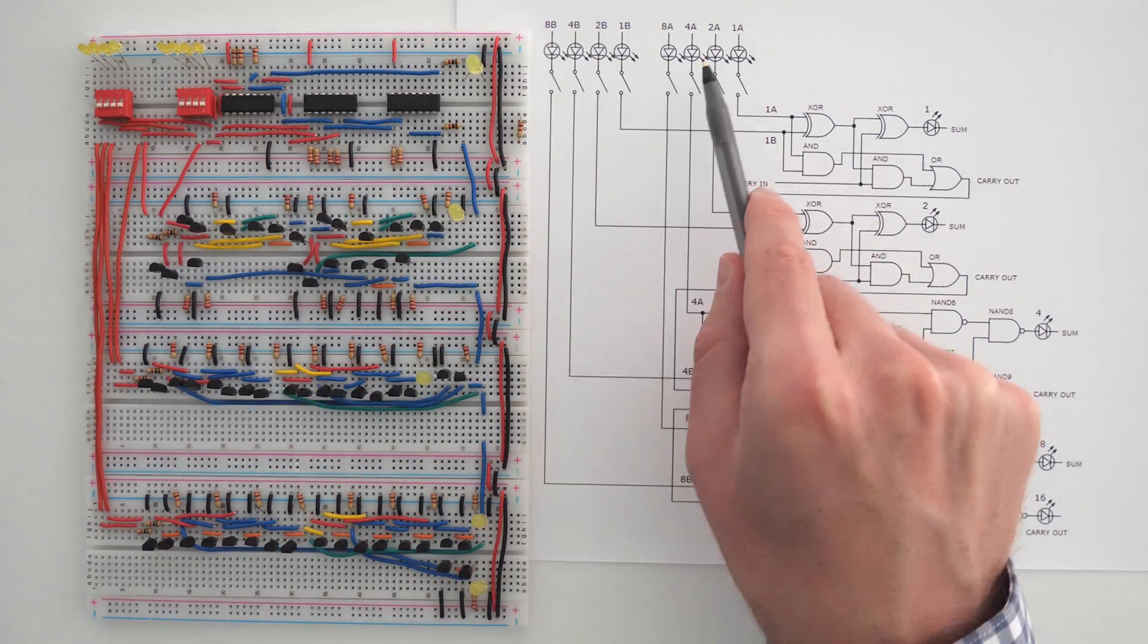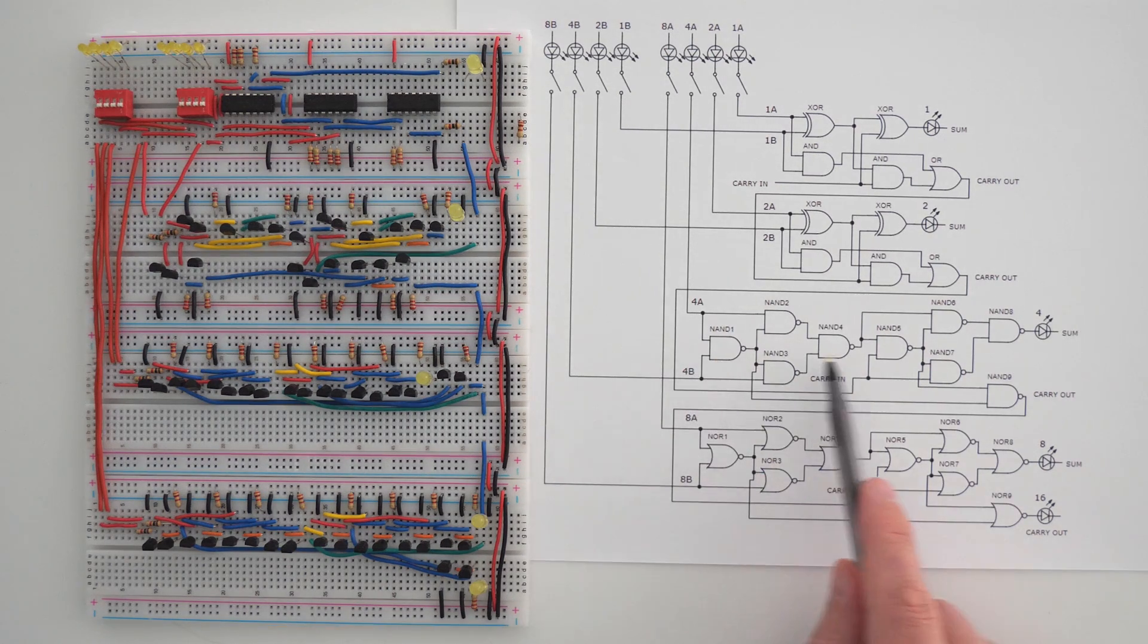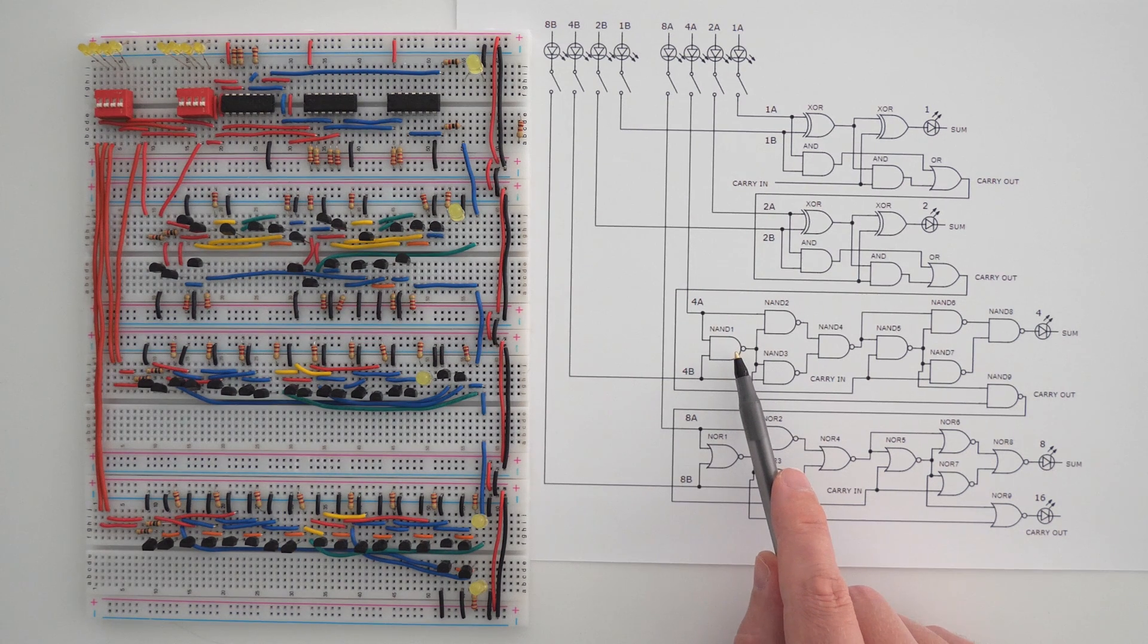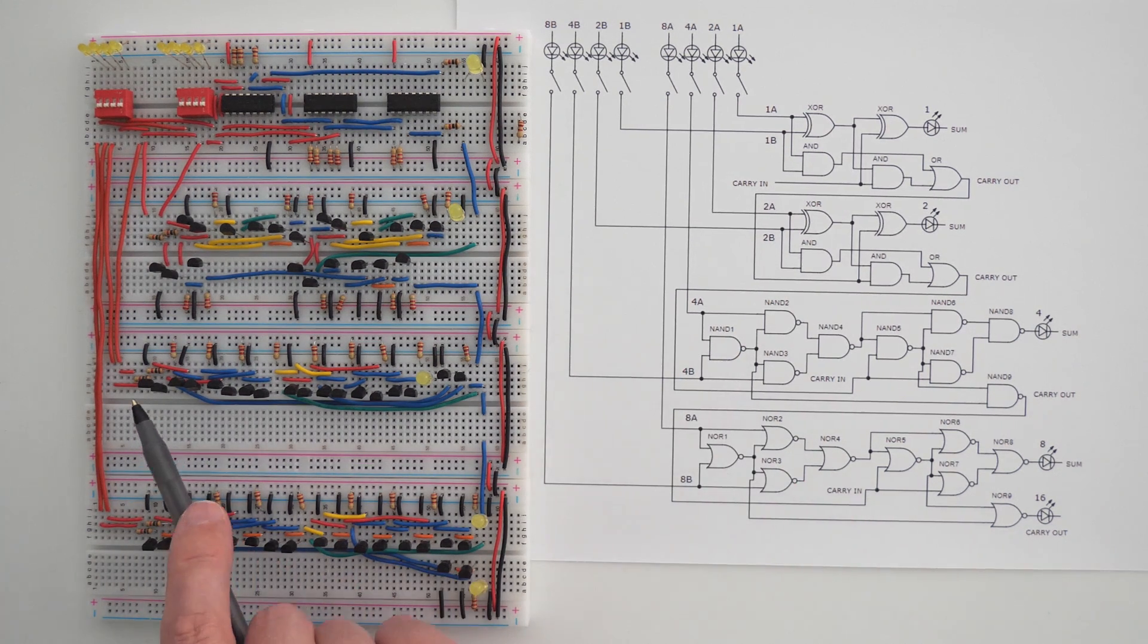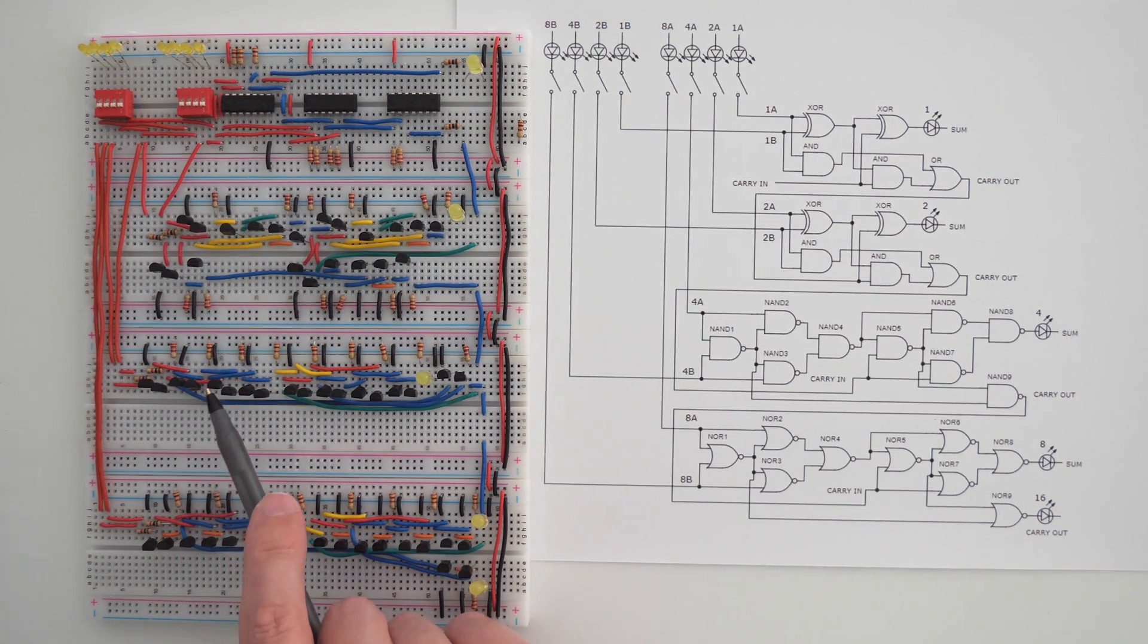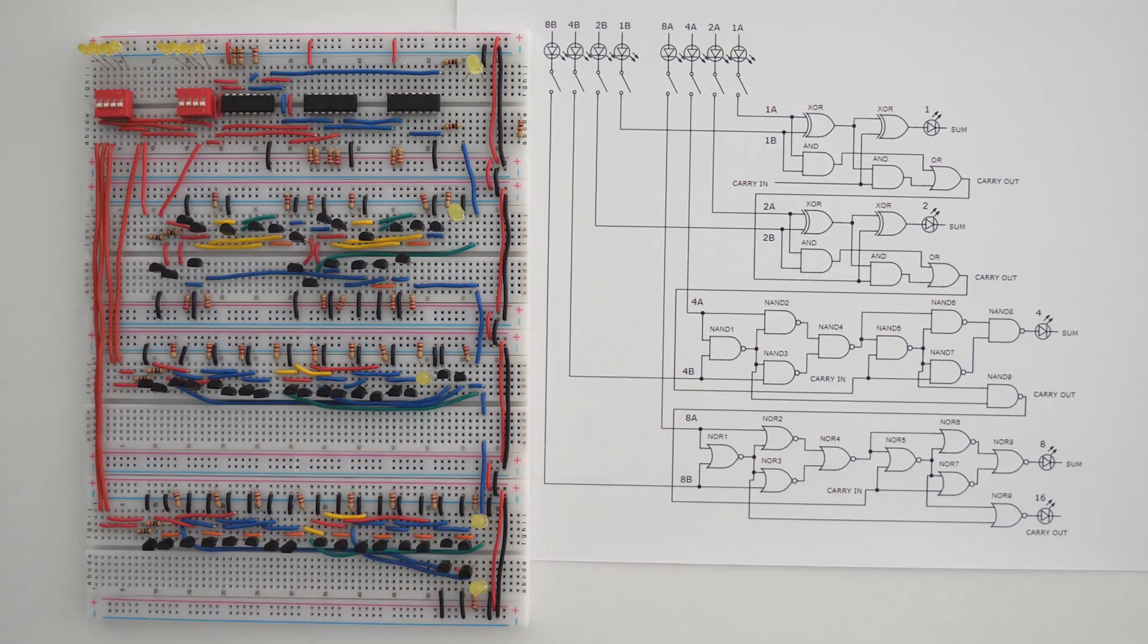Then we have inputs 4A and 4B, which come down into this third full adder, which is made with nine NAND gates. One NAND gate is made with two transistors. So we have NAND gate 1, NAND gate 2, NAND gate 3, etc., the whole way down.